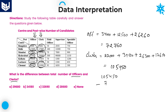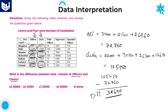Officers total is 72,760. The difference between clerks (1,05,450) and officers (72,760): unit's place — 15 minus 6 is 9; 13 minus 7 is 6; then 4 minus 2 is 2; and 3. The answer is 32,690. Option C — that is the difference between total number of clerks and officers.